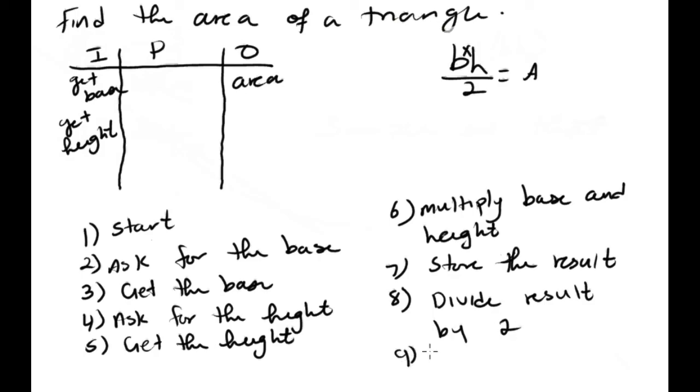So we say divide the result by 2. Then in step 9 we say store the area. Because after this step the result I have is the area. So I just say store the area. Step 10, you see, display area. So I'm telling the user what the answer is or what the area is. And step 11, running out of space, is to stop. So I started here, so I must end here. Stop.